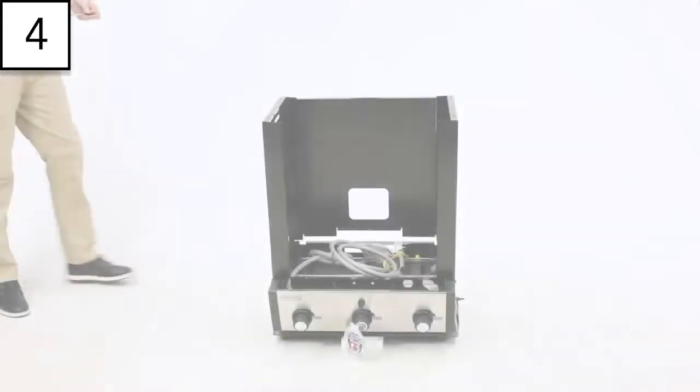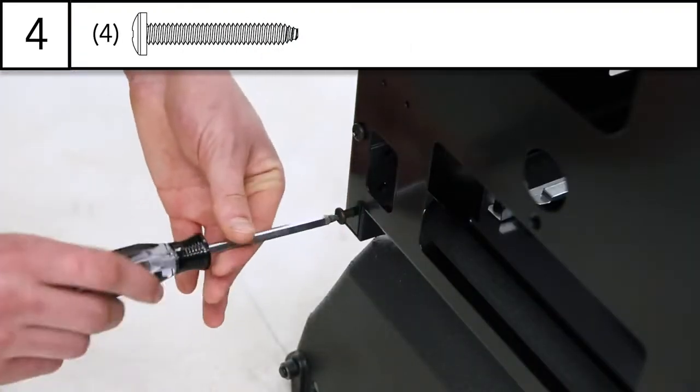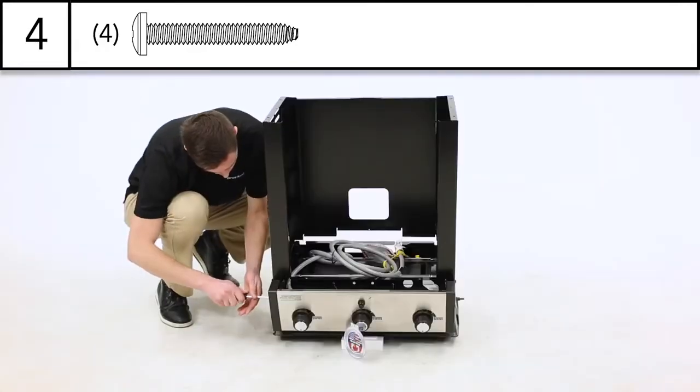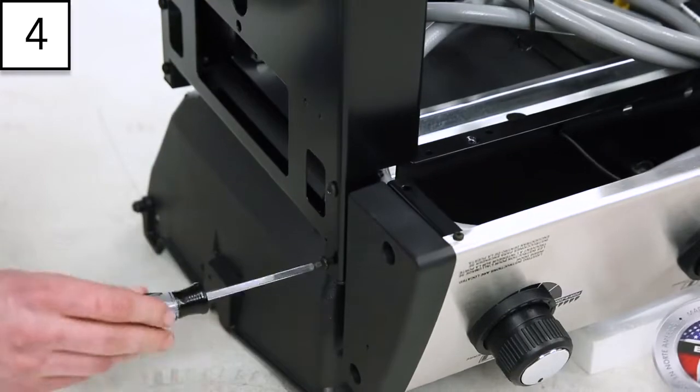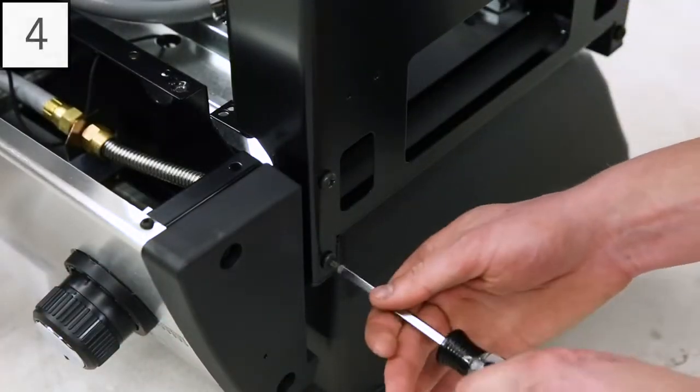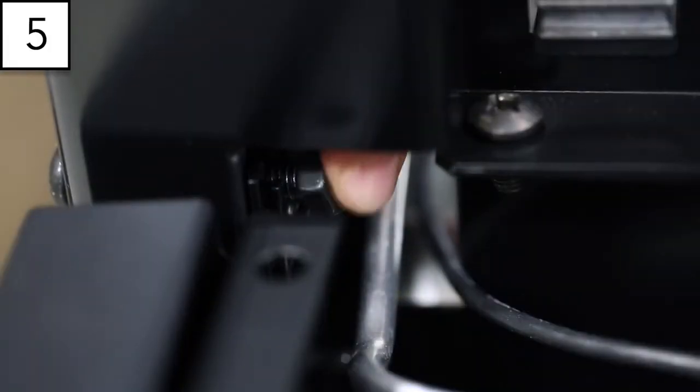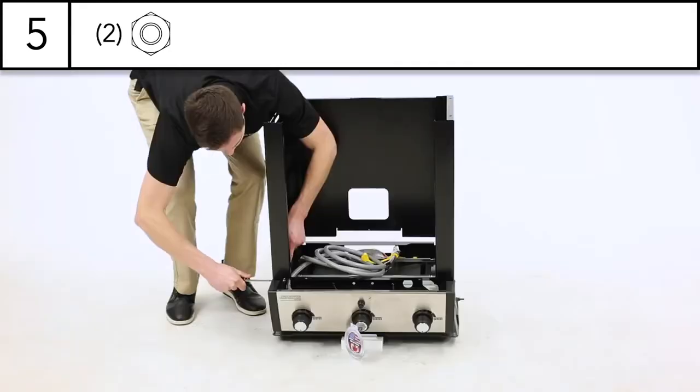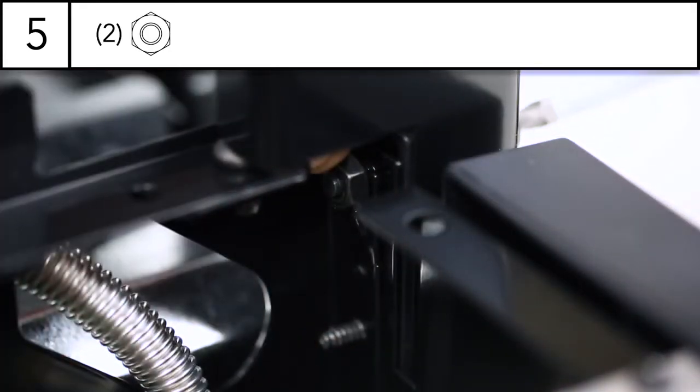Step 4. Insert a long bolt through the hole in the top corner of the cabinet assembly and tighten. Step 5. Place a nut on the two screws on the front corner of the side panels that are resting in the grooves on the cook box and tighten.